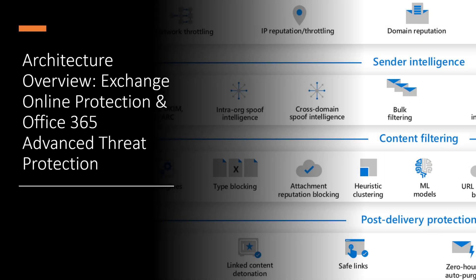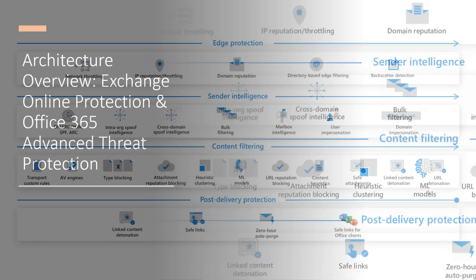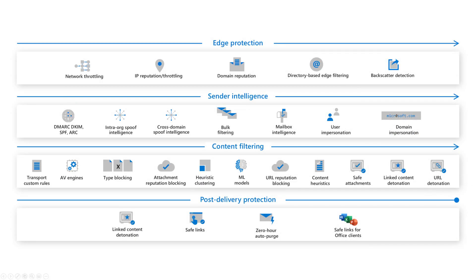Let's talk about how Exchange Online Protection and Office 365 Advanced Threat Protection can protect you against advanced email-based threats. At a high level, this is the architecture we're dealing with across four different categories. Let's dive into each one.